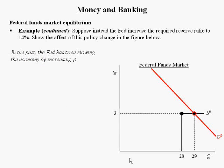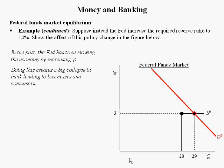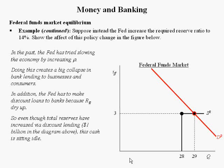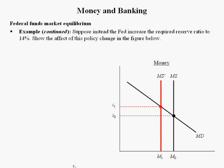When the Fed raises the reserve requirement ratio, all excess reserves in the system dry up. Banks have a hard time meeting the reserve requirement, so they have to go to the emergency source of lending — the Fed. Because the Fed raised the reserve requirement ratio, it now has to make $1 billion in discount loans so banks can meet the reserve requirement. Even though total reserves have increased via discount lending, this cash is sitting idle. The effect is a reduction in the money supply, which raises the nominal rate of interest.